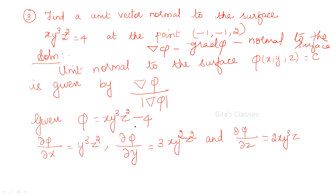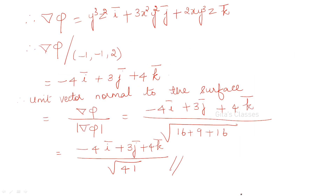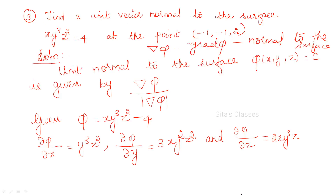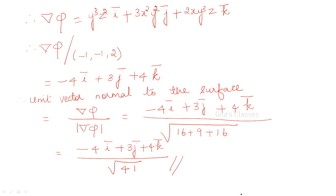Given phi = xy³z², find ∂φ/∂x, ∂φ/∂y, ∂φ/∂z. Differentiate partially with respect to x, y, and z and write as i, j, k components. Then evaluate del phi at the point (−1, −1, 2) by replacing x = −1, y = −1, z = 2. The unit vector normal to the surface is del phi divided by |del phi|, where modulus means the square root of the sum of squares of the i, j, k coefficients.